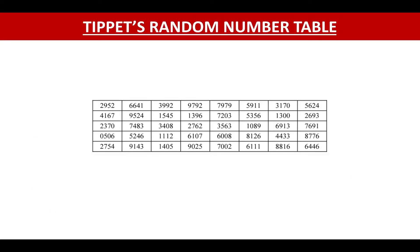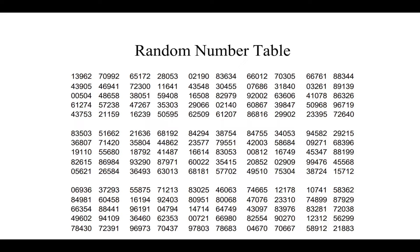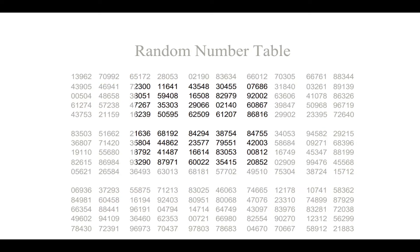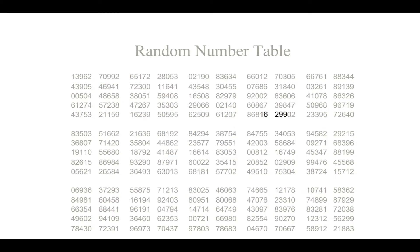Now coming to Tippett's random number table. In the case of a large population size, we cannot rely on humans to generate random numbers. Tippett published the first random number table in 1927. It consisted of 26 pages with 10,404 digit numbers taken from the British Census reports. Any page of the table is selected at random, and the numbers in any row, column, or diagonal selected at random may be taken to constitute the sample.